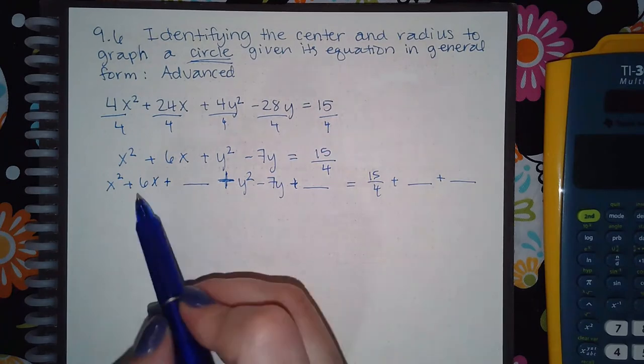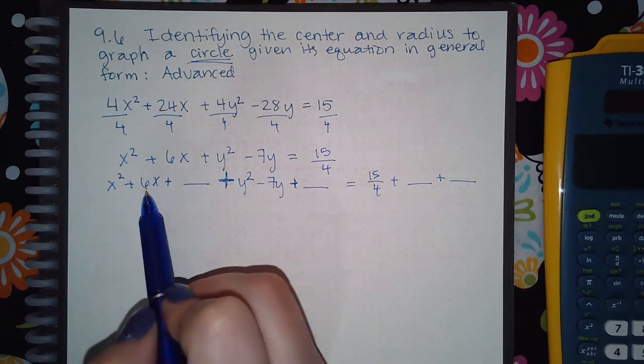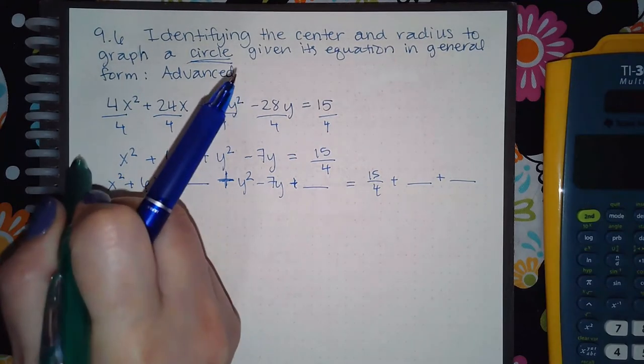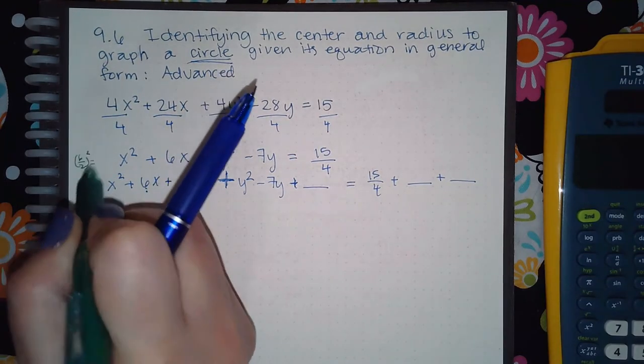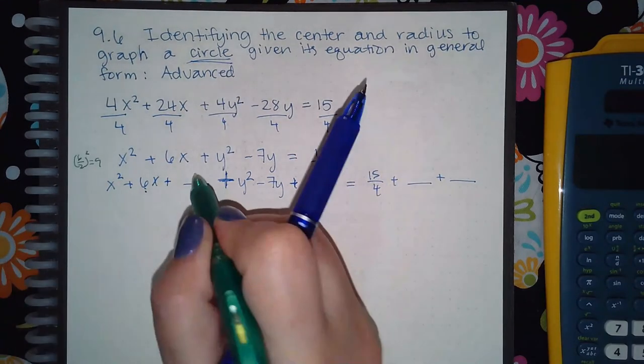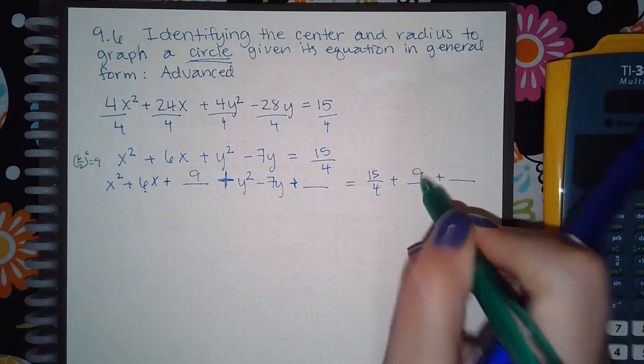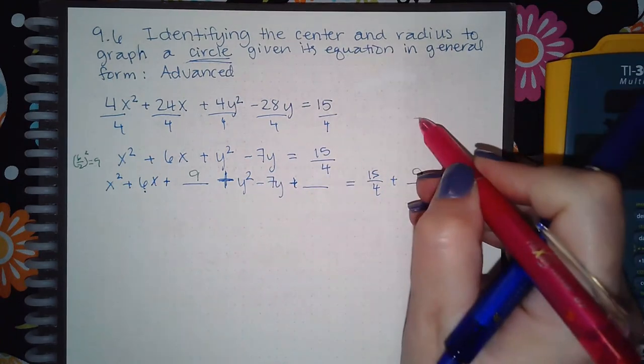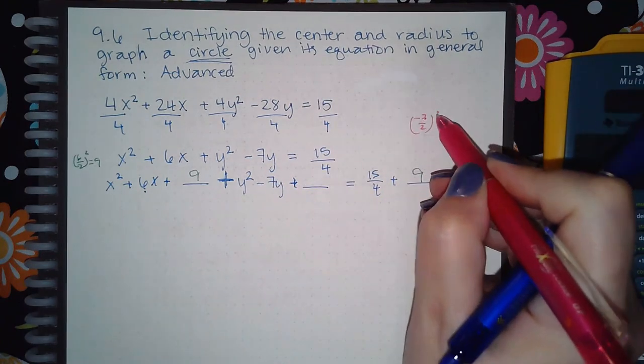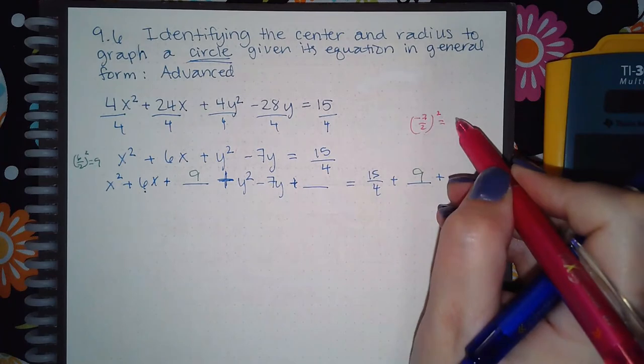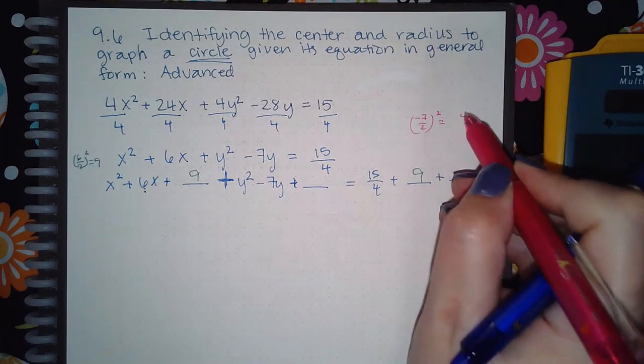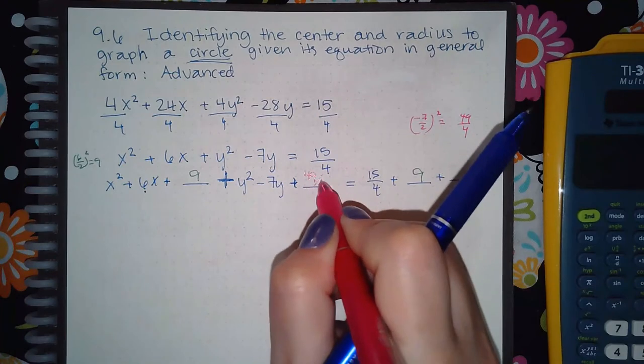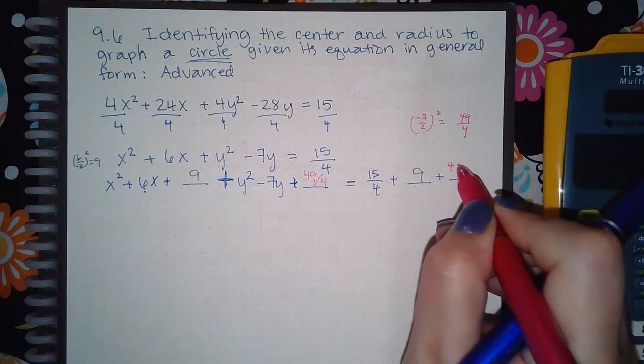So if I take this number and divide it by 2 and square that, I get 6 over 2 squared, which is 3 squared, which is 9. So I'm going to add 9 to both sides. Then over here I'm going to take negative 7 and divide it by 2 and square it, but this doesn't simplify. So if I square this I get positive 49 over 4. So it's going to be 49 over 4 that I add to both sides.